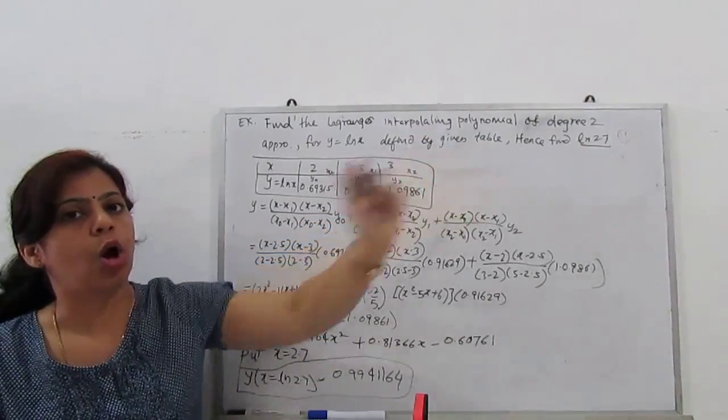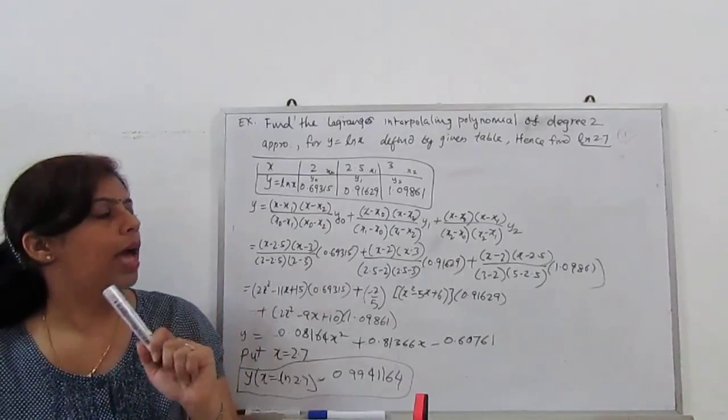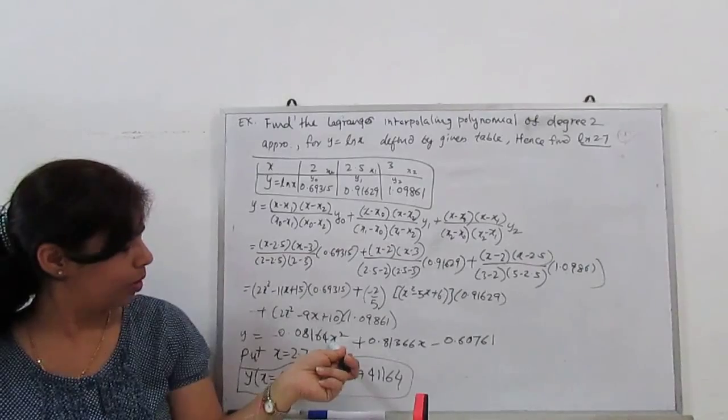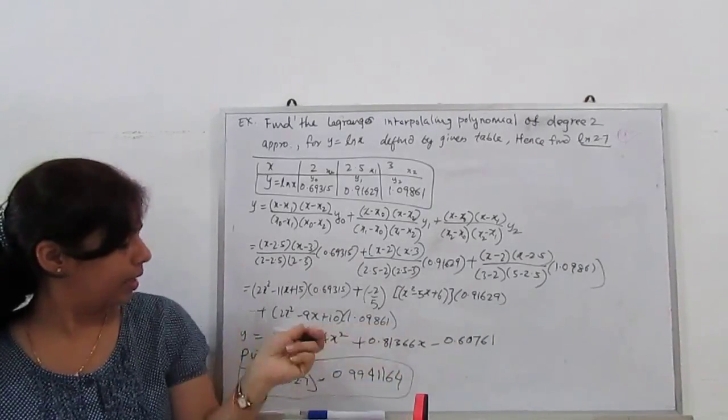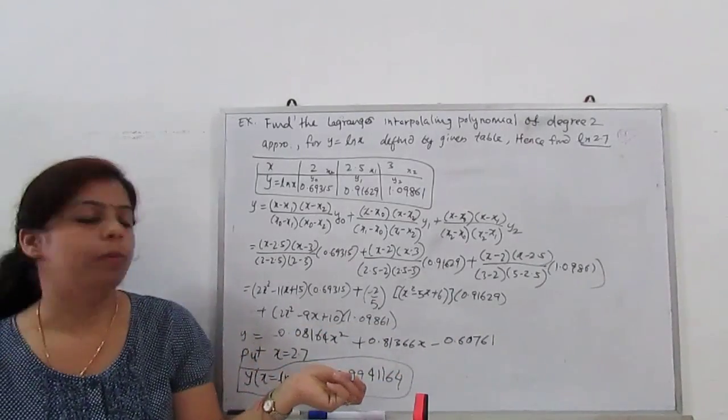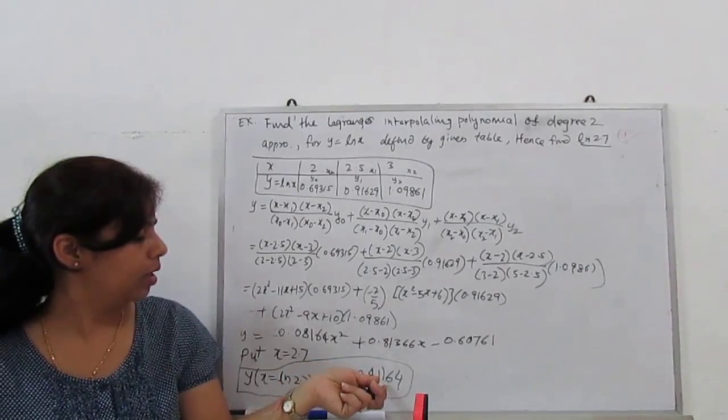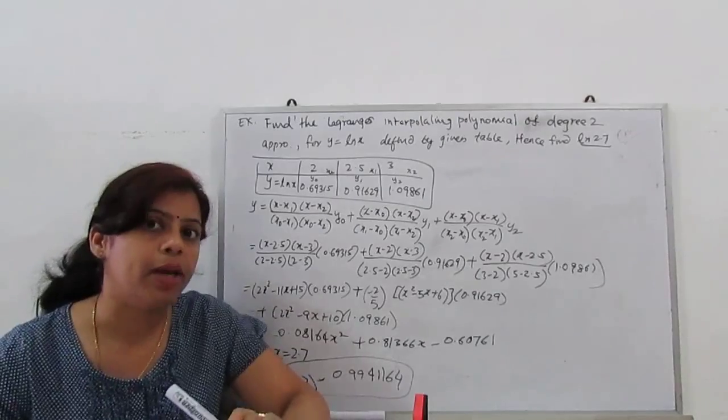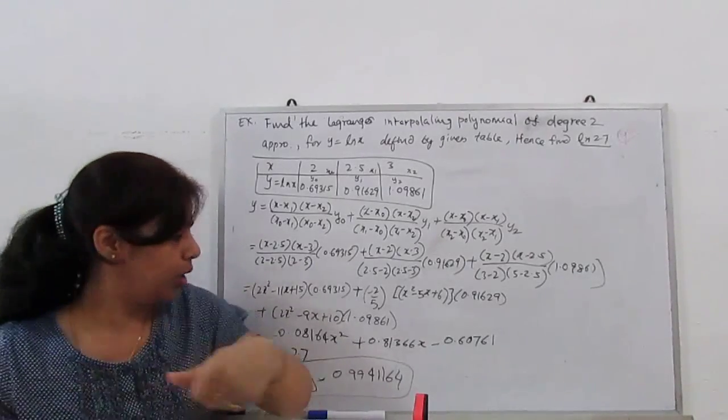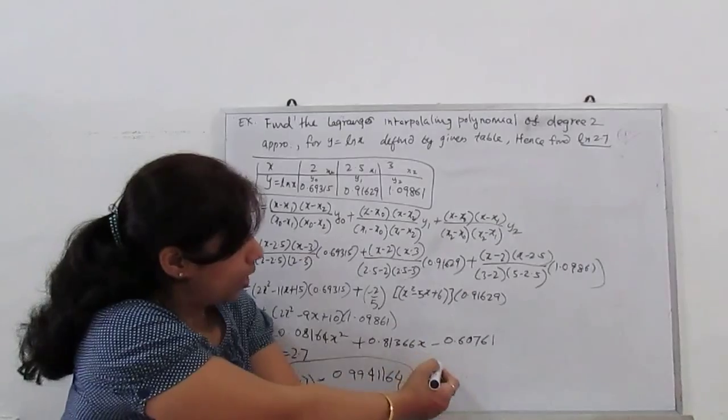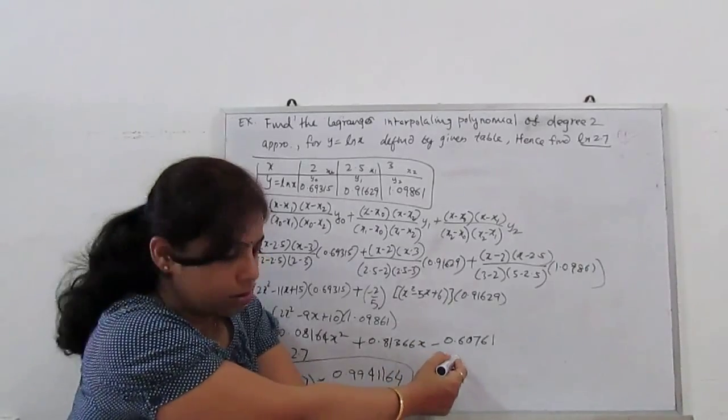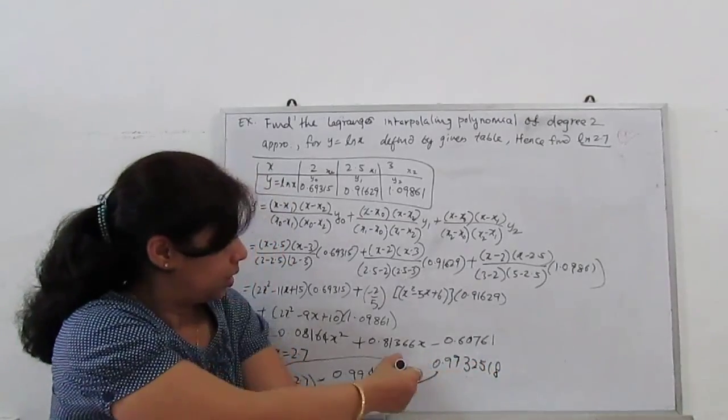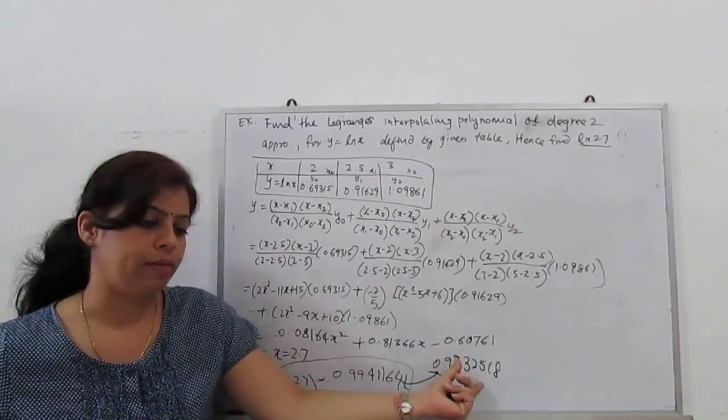Next, if we have to find log of 2.7 then x is 2.7. Substitute x here: (2.7)², 2.7 and calculate it. So value at 2.7 is given by 0.9941164 which we compare with accurate value.